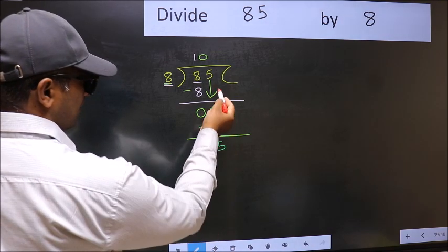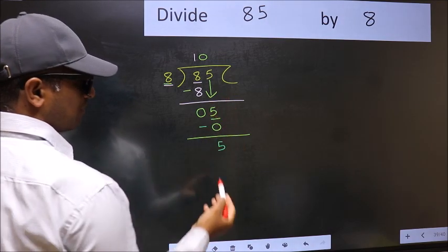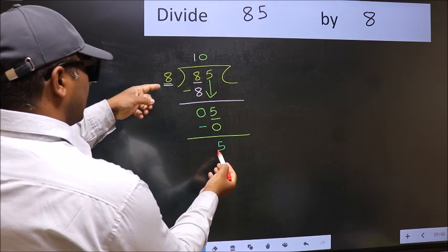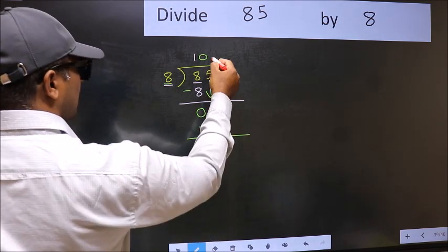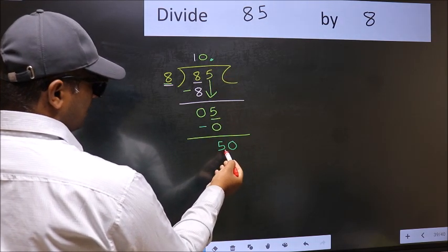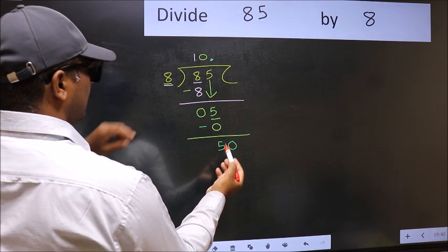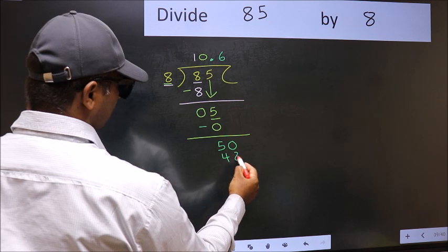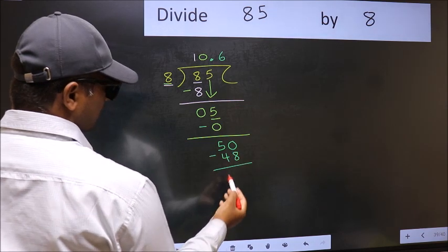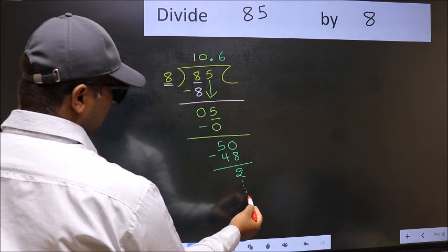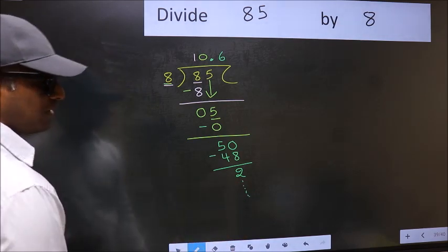Over here, we did not bring any number down. And 5 is smaller than 8. So, now you can put dot and take 0. So, 50. A number close to 50 in 8 table is 8, 6, 48. Now, you should subtract. We get 2. And continue the division. I am not doing that.